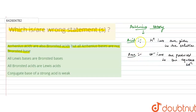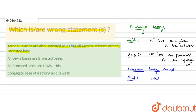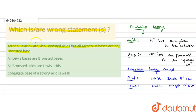According to Bronsted-Lowry concept, an acid is a substance which donates H⁺ ions to another species — these are known as Bronsted-Lowry acids. A base is a substance which accepts the H⁺ ions. This is the definition of acid and base according to Bronsted-Lowry theory.